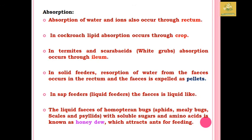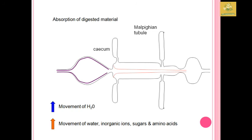The absorption of water and ions mainly occurs through the rectum. In cockroaches, lipid absorption is mainly done by the crop. In dermestes and scarabids, also known as white grubs, absorption occurs through the ileum. In solid feeders, reabsorption of water from fecal matter occurs in the rectum and the feces are expelled as pellets. In sap feeders, the feces are liquid. In hemopteran bugs, the liquid feces contains soluble sugars and amino acids and is known as honeydew, which attracts ants for feeding. I have provided a diagram showing movement of water in blue, and movement of inorganic ions, sugars, and amino acids in yellow.